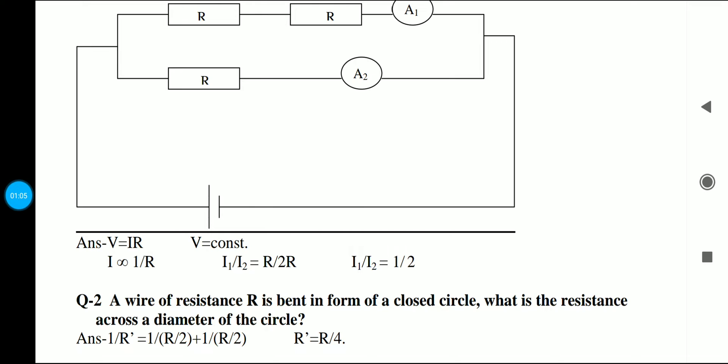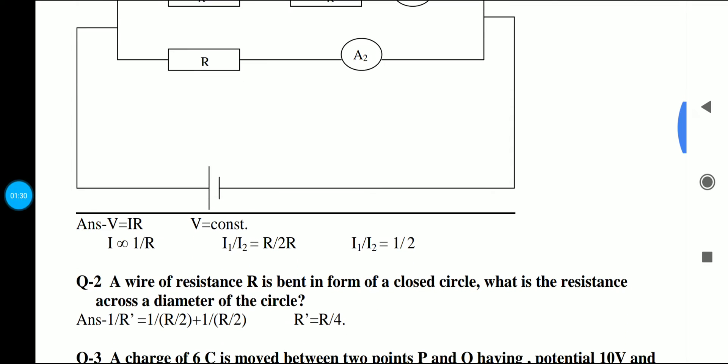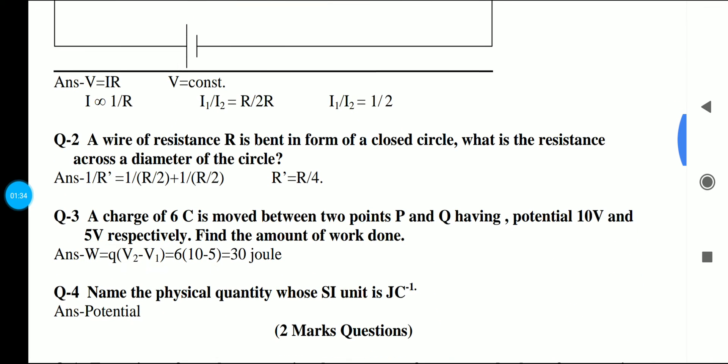We will find I1 upon I2. If we label it, V will cancel out. So we have R upon 2R, because when we do the calculation here, in A1 there are two resistances, and A2 has one resistance. So we have R upon 2R, and after canceling, the answer is 1 by 2. This way our question 1 is complete.